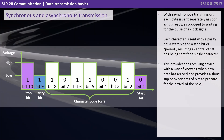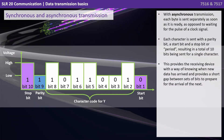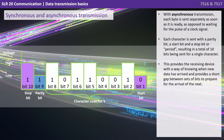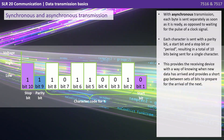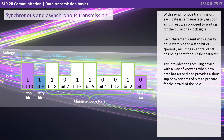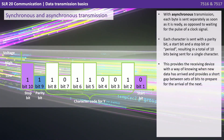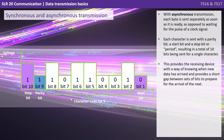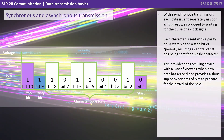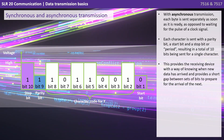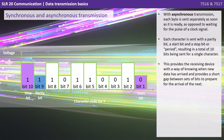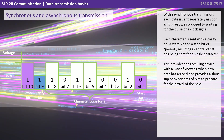With asynchronous transmission, each byte is sent separately as soon as it's ready, as opposed to waiting for the pulse of a clock signal. Each character is sent with a parity bit, a start bit, and a stop bit, resulting in a total of 10 bits being sent for a single character. This provides the receiving device with a way of knowing when new data has arrived, and provides a short gap between sets of bits to prepare for the arrival of the next.